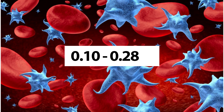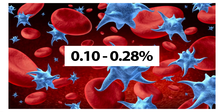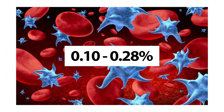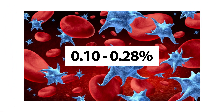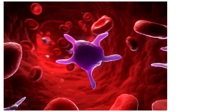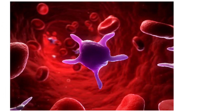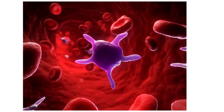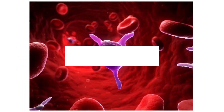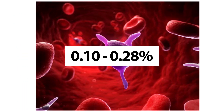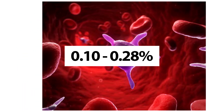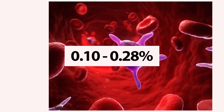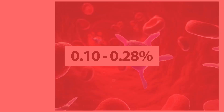Thrombocrit, or platelet crit, is the percentage of blood volume occupied by platelets, which is about 0.10 to 0.28%. Basically, it means if you randomly take any amount of blood and measure the platelets in it, you will find that 0.10 to 0.28% of it are actually platelets.